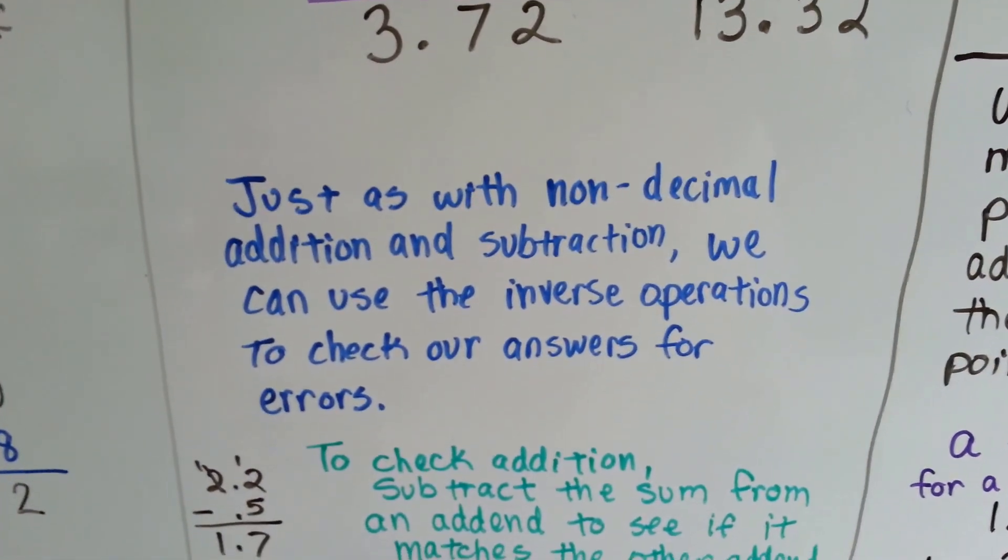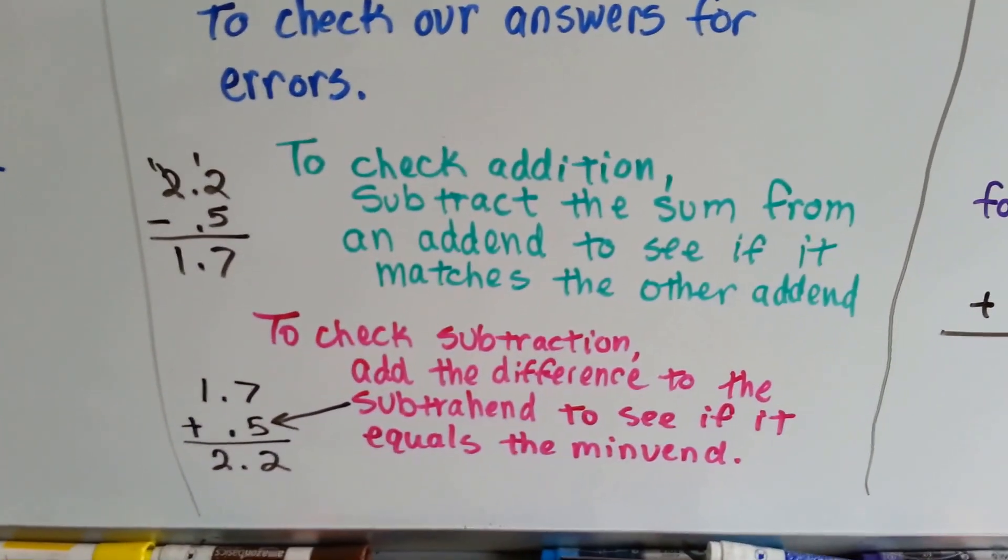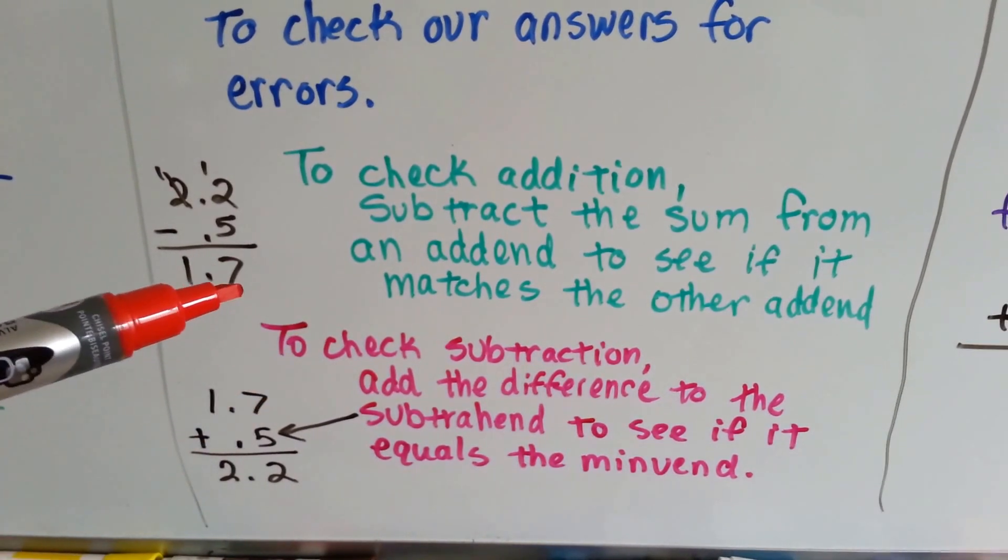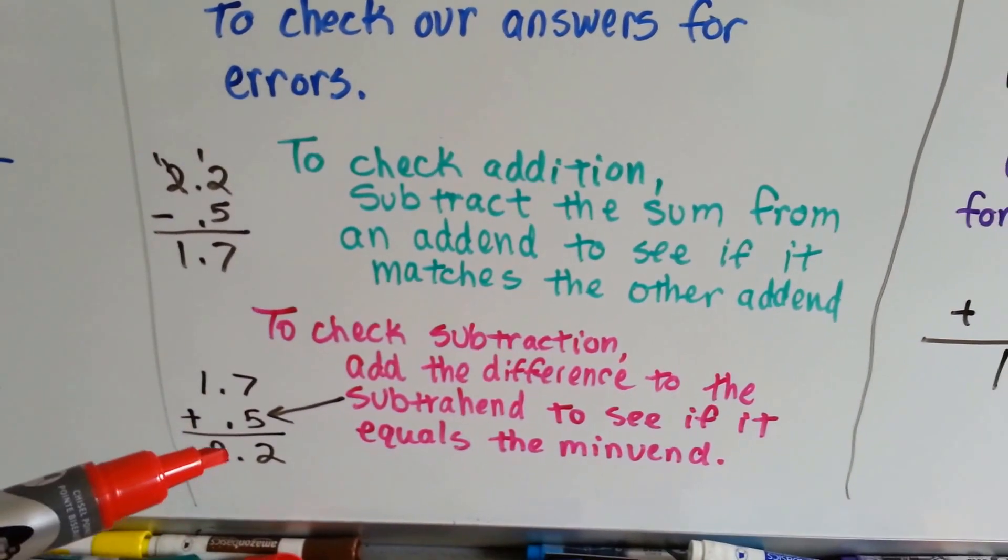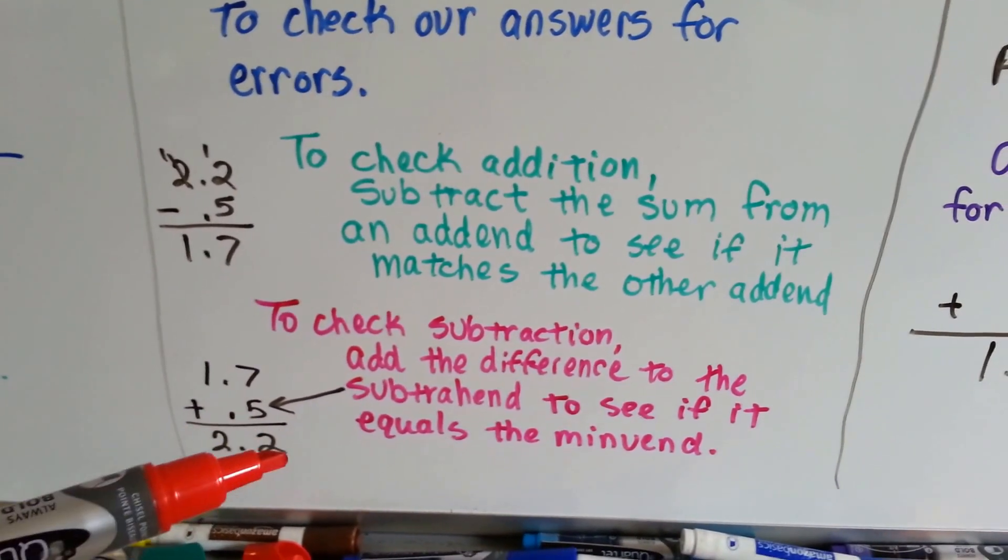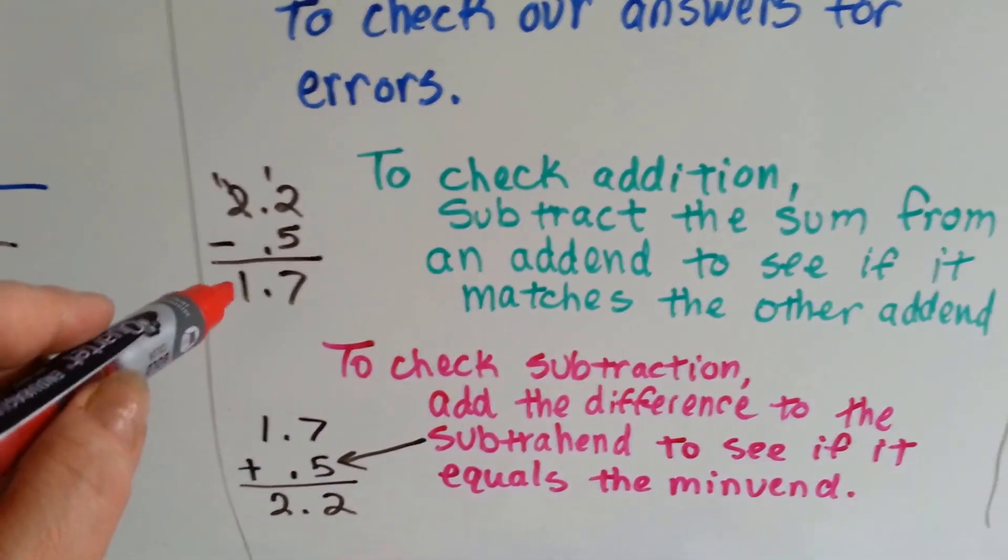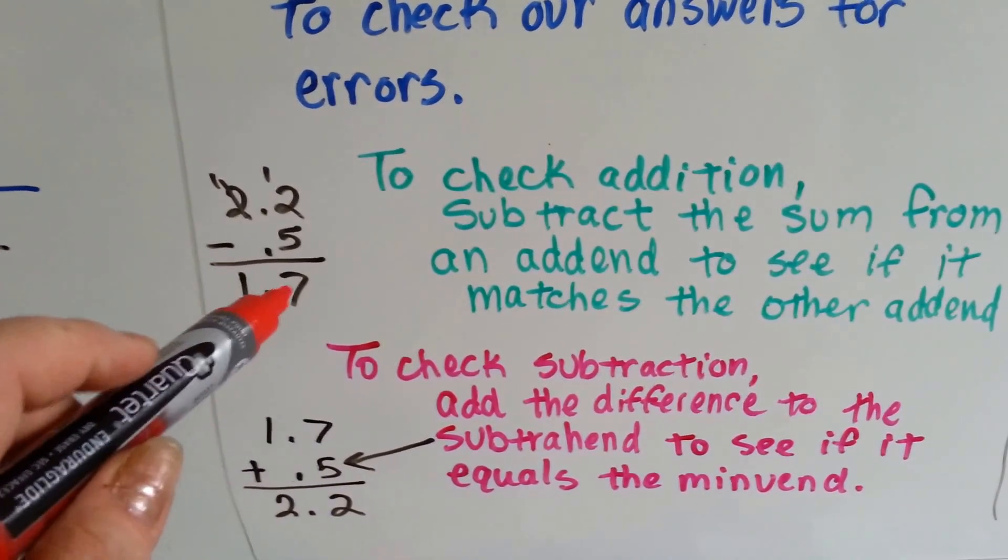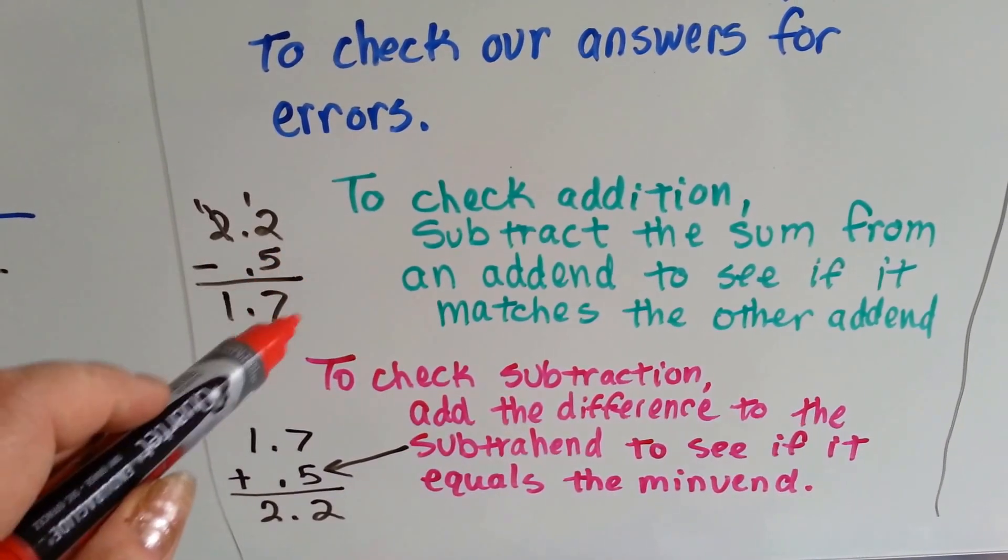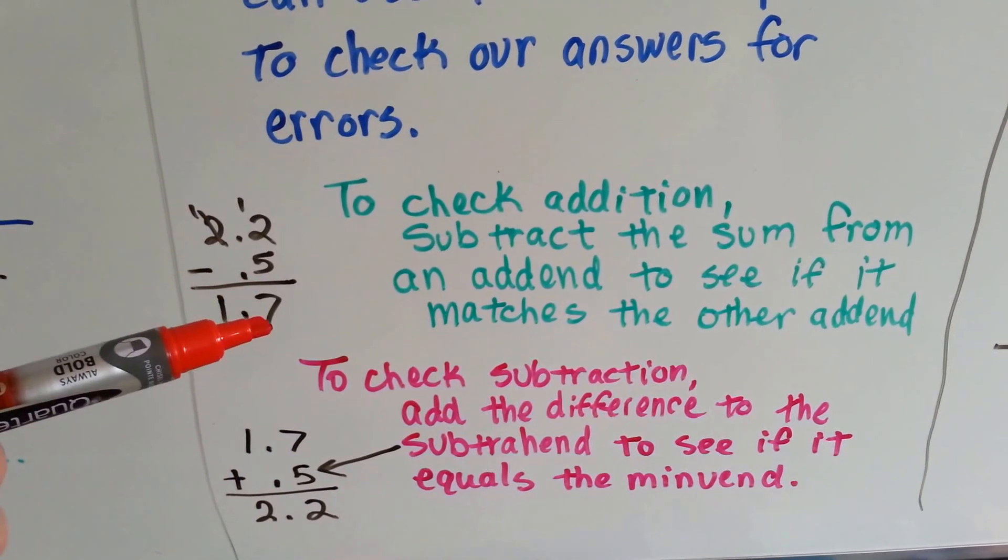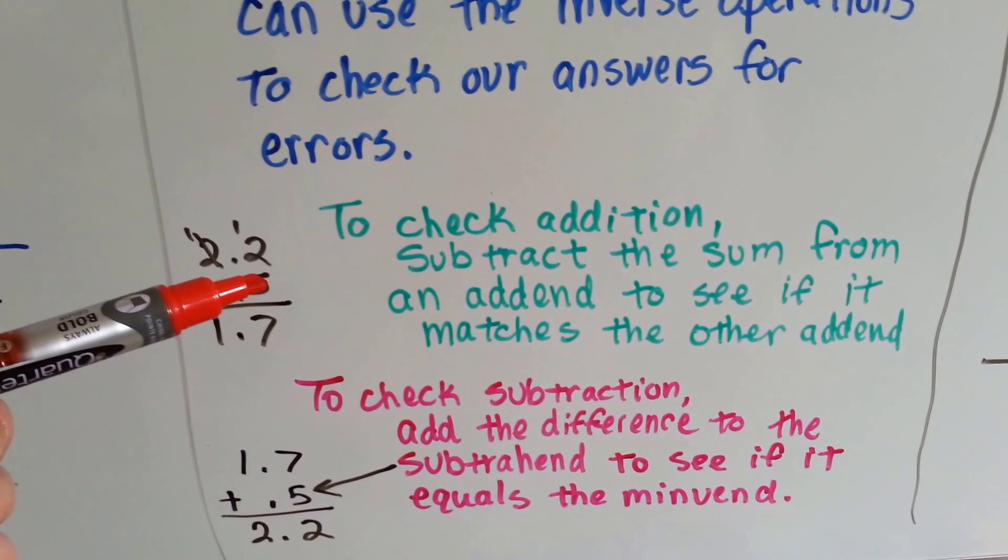So just as with non-decimal addition and subtraction, we can use the inverse operations to check our answers for errors. For addition, you just subtract the sum from an addend to see if it matches the other addend. And for subtraction, we add the difference to the subtrahend to see if it equals the minuend. So if you don't remember your basic subtraction problems, in a subtraction problem, this is the minuend, this is the subtrahend, and this is the difference. MSD. So all you have to do is add the difference and the subtrahend and see if it equals the minuend.